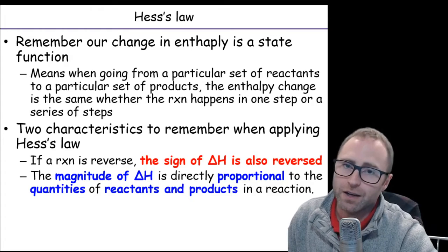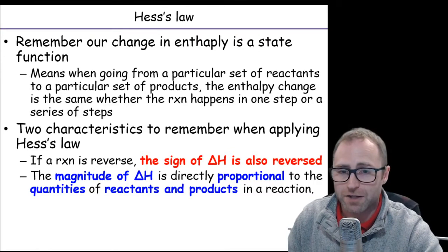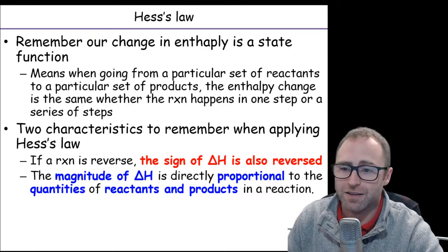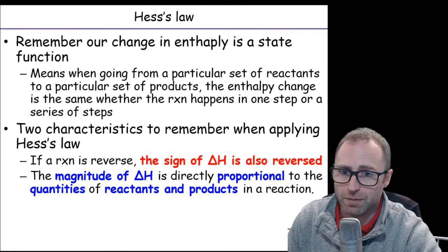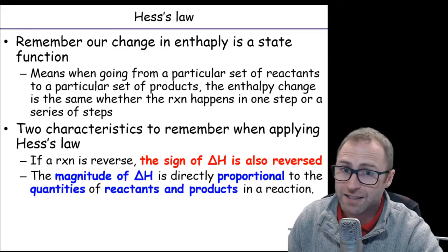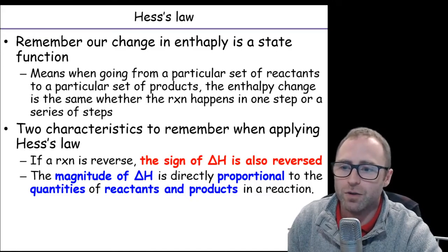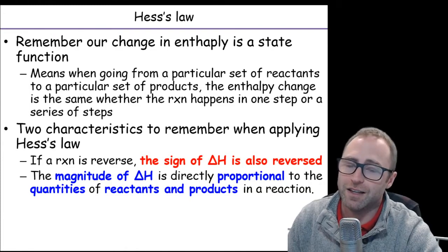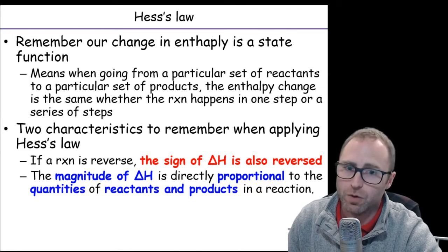Translation. If we end up needing to multiply a chemical reaction, an entire reaction, both the products and the reactants, by some multiple, maybe the number two, because in order for the problem to work, we need double the amount of reactants and double the amount of products. That's legal. Absolutely legal. But what we have to do is also multiply the enthalpy value for that reaction by two, or whatever coefficient it was that we multiplied our reactants and products by.